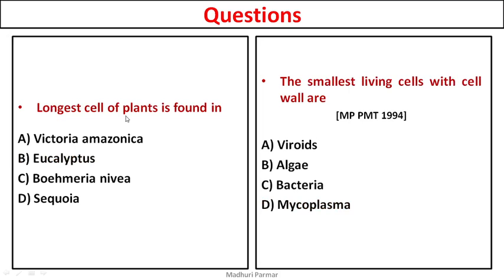The longest plant cell is found in: Victoria amazonica, Eucalyptus, Bohmeria nivea, or Sequoia? Eucalyptus and Sequoia are actually names of trees. The answer is Bohmeria nivea, which we just studied in this class.